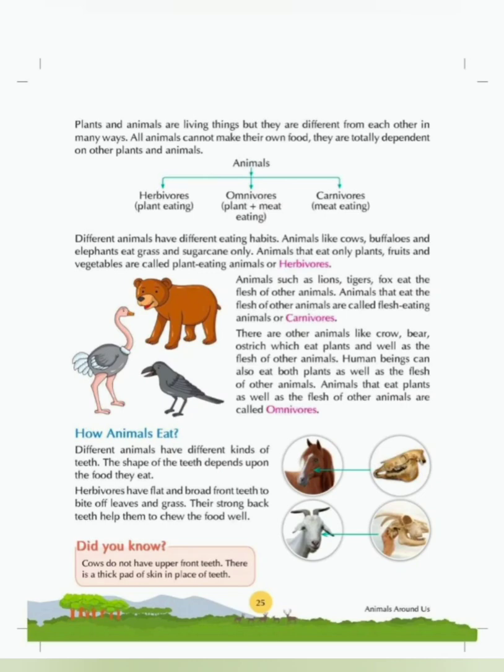Based on their food, these animals are categorized into three categories: herbivores, omnivores and carnivores. Let's study about all these types of animals in detail.